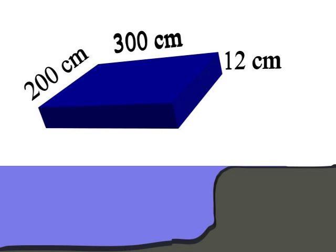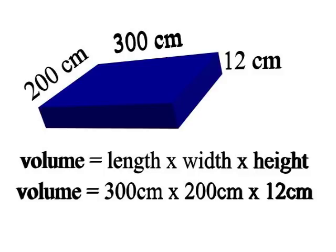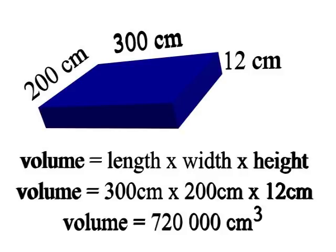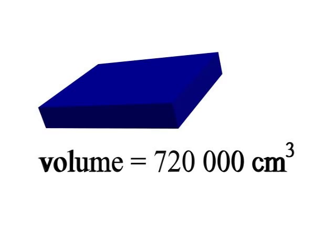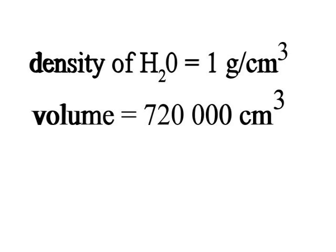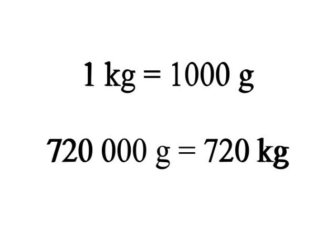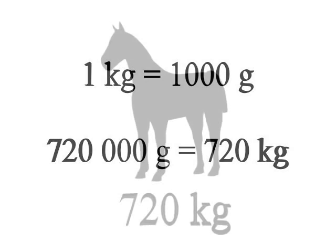The displaced volume is 300 centimeters by 200 centimeters by 12 centimeters. The volume of a rectangular prism is length times width times height — that's 300 × 200 × 12 centimeters, which equals 720,000 cubic centimeters. Fresh water has a density of one gram per cubic centimeter, meaning 720,000 cubic centimeters of water weighs 720,000 grams. Converting to kilograms — one kilogram equals one thousand grams — the displaced water weighs 720 kilograms. Therefore, the horse weighs 720 kilograms.